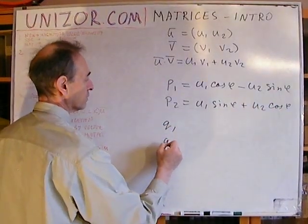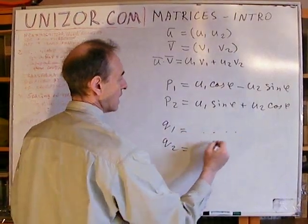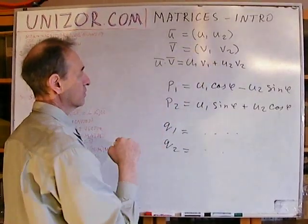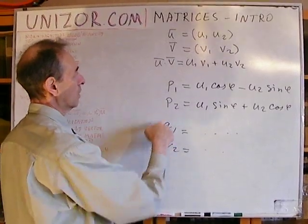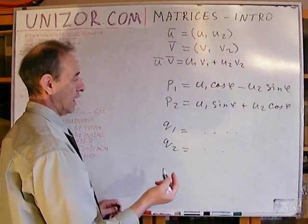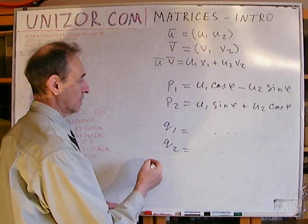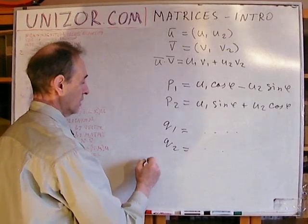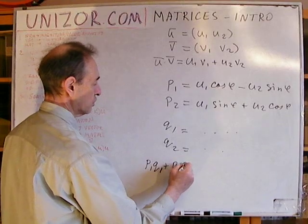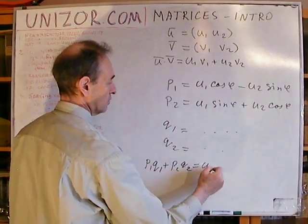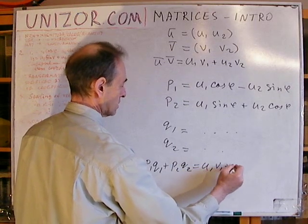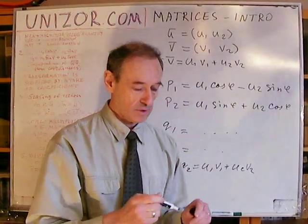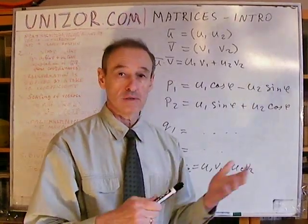Correspondingly, q1 and q2 would be exactly the same but using v instead of u. So p1 and p2 are new coordinates of vector u, and q1, q2 are new coordinates of vector v. And I proved that this transformation of coordinates doesn't really change this expression. So p1·q1 plus p2·q2 would be exactly the same as u1·v1 plus u2·v2. I basically multiplied whatever the coordinate transformation requires and came up with exactly the same thing.